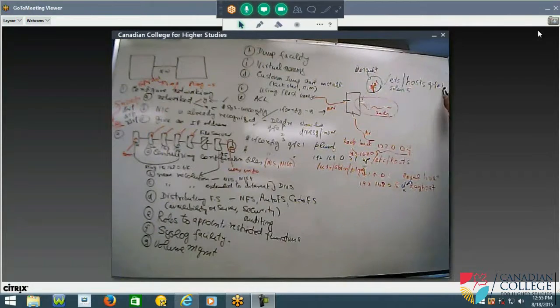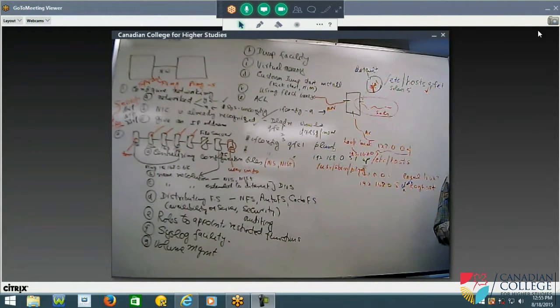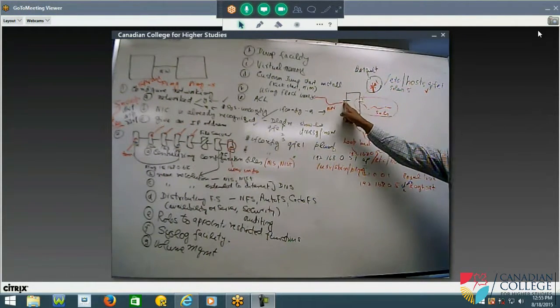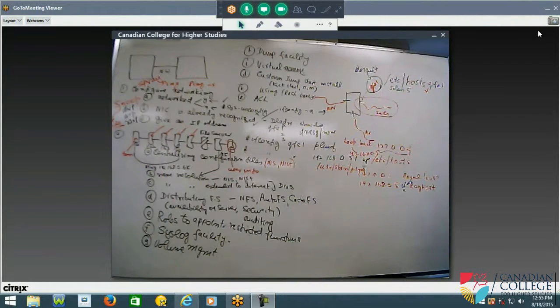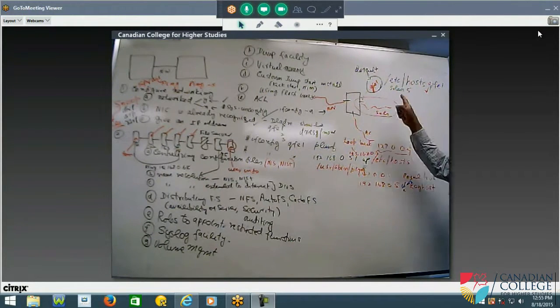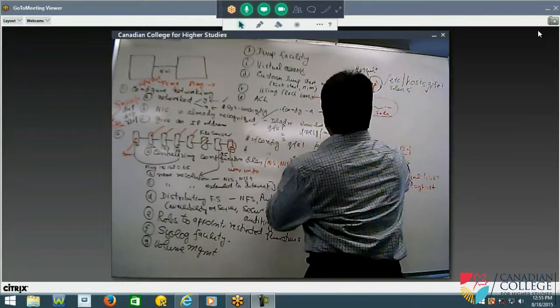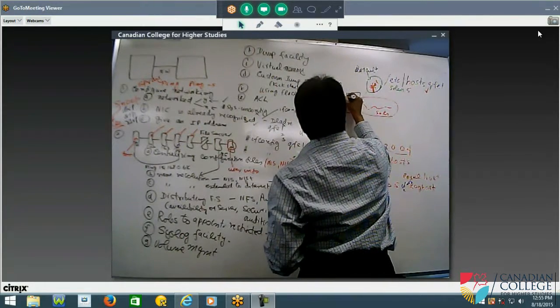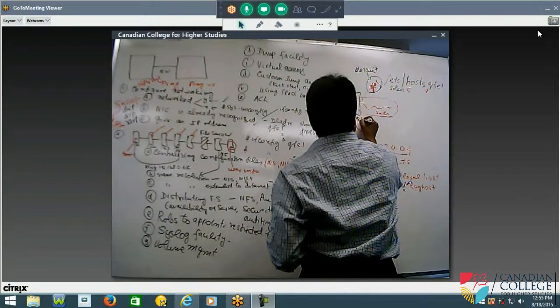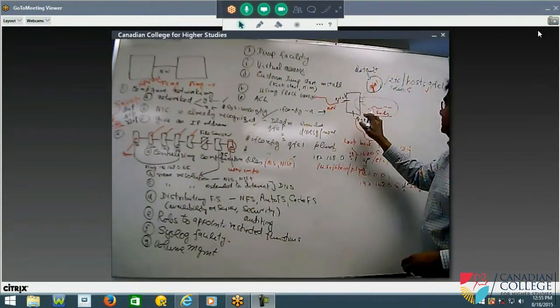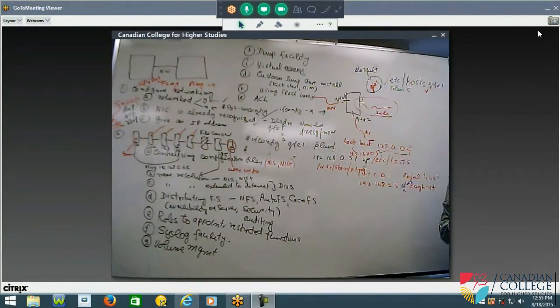So, so this is created by default. So this is already there. Okay. Then what about for this card and this card? Do we have anything like this? ETC host dot QFE zero. We assume this is QFE zero. And this is QFE two. Do we have for this?